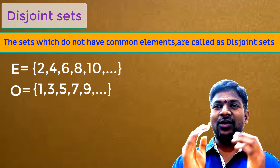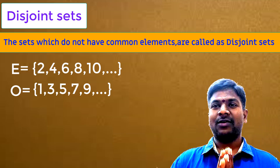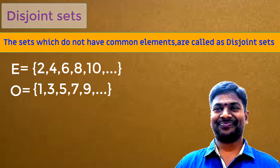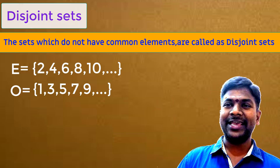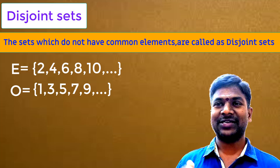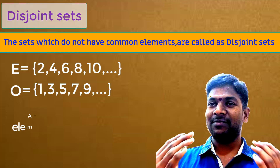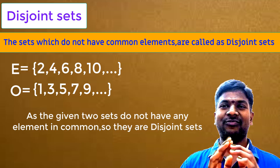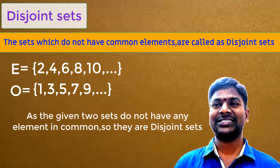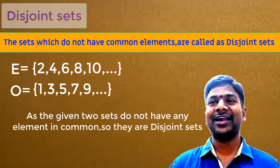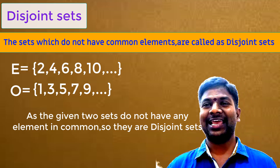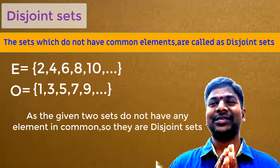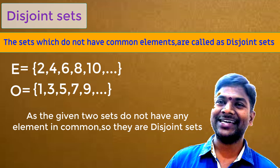Children, what did you observe from these two sets E and O? Can you find any common elements in both sets? No. Even numbers are divisible by 2 and odd numbers are not divisible by 2. So you cannot find any common element in both the sets. We conclude that these two sets have no common elements, so these are disjoint sets.